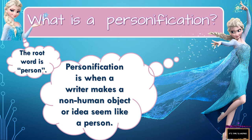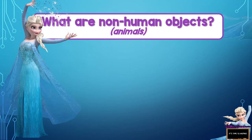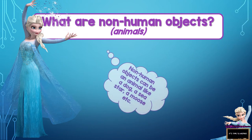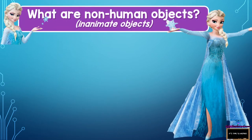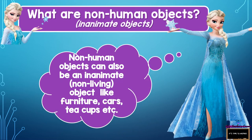What is a non-human object? We will be talking about two types of non-human objects. The first one is animals — non-human objects can be an animal like a dog, a sea star, a moose, et cetera. And another type is inanimate objects — non-human objects can also be inanimate objects like furniture, cars, teacups, your bed, or even a snowman.